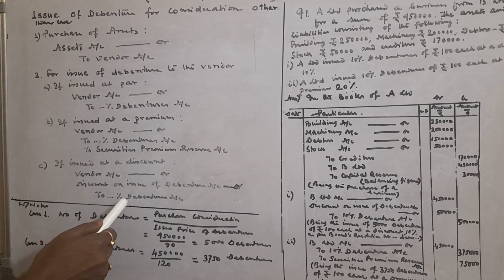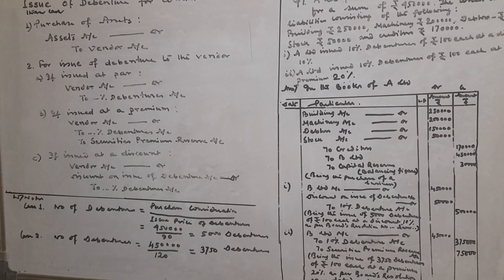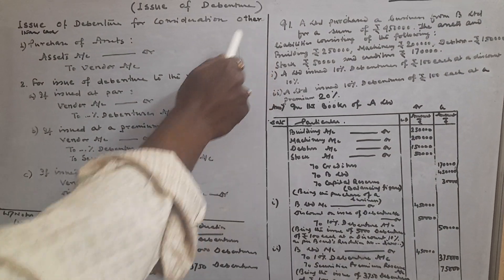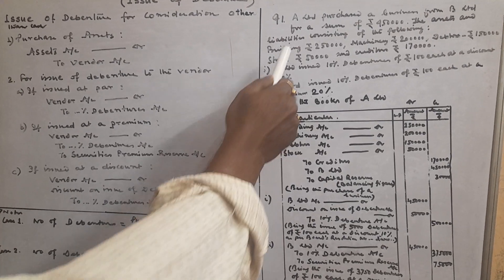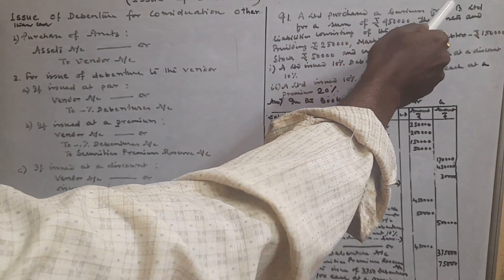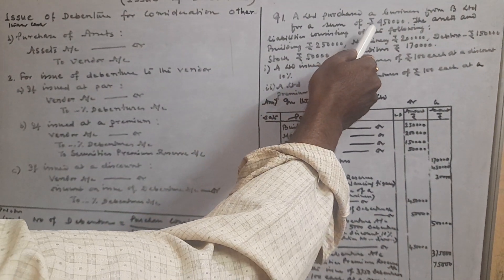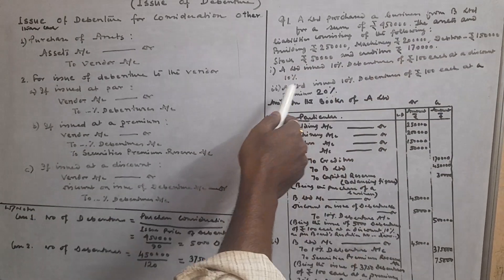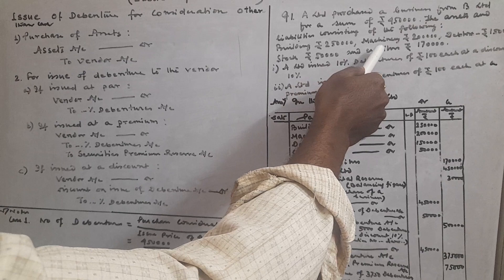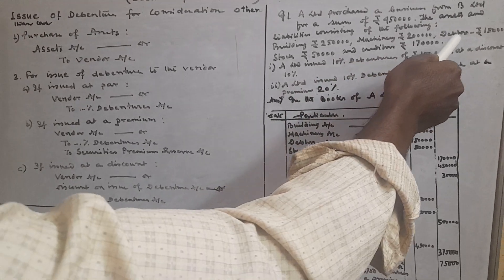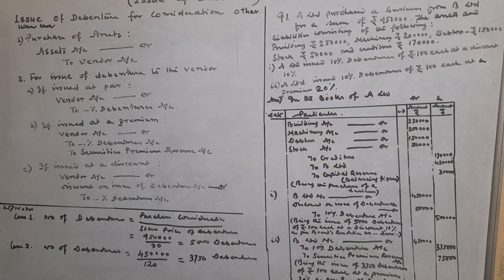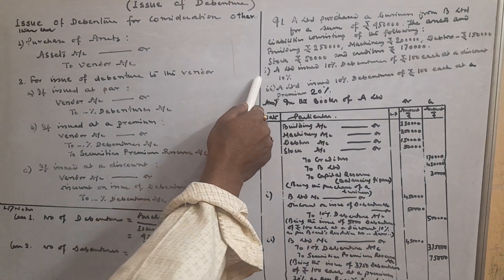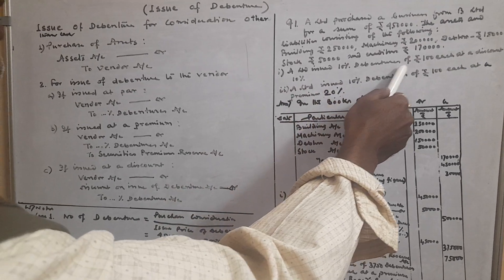Now one question has been given related to issue of debenture for consideration other than cash. A Limited purchased a business from B Limited for a sum of rupees 4 lakh 50 thousand. The assets and liabilities consist of: Building rupees 2 lakh 50 thousand, Machinery rupees 2 lakh, Debtors rupees 1 lakh 50 thousand, Stock rupees 50 thousand, and Creditors rupees 1 lakh 70 thousand.